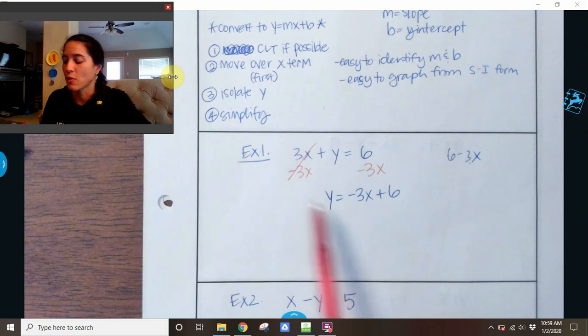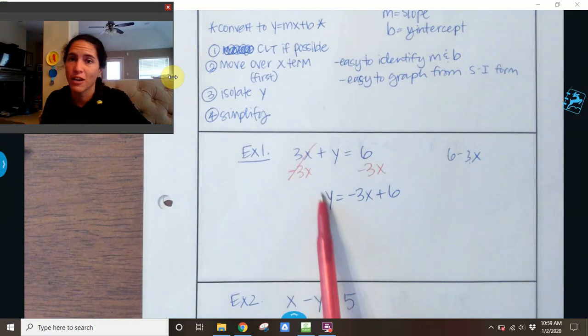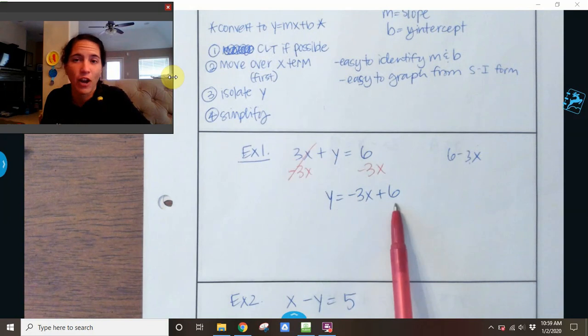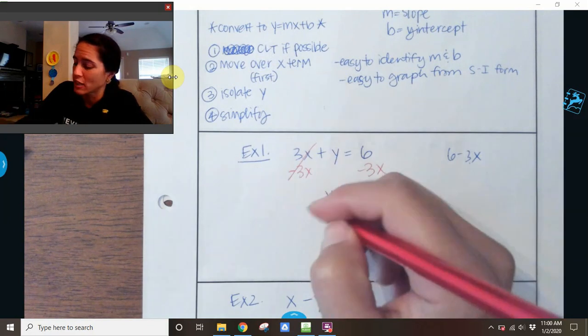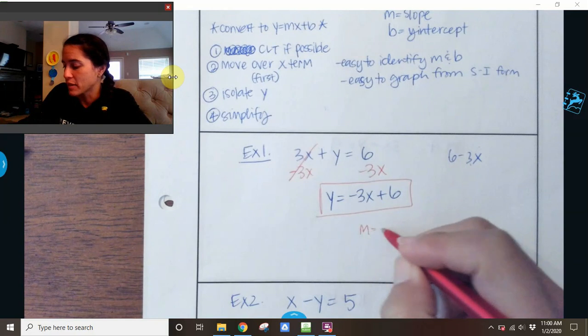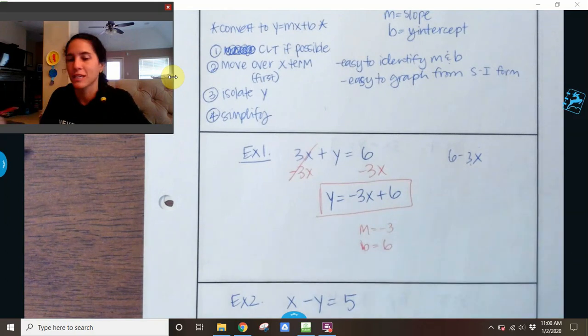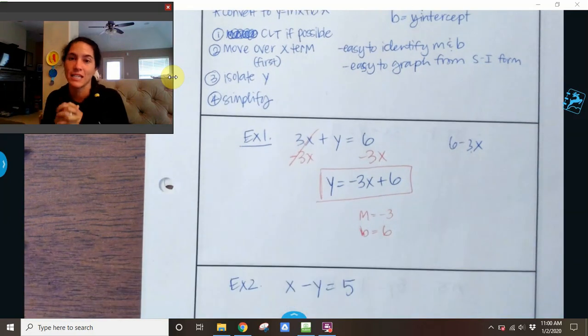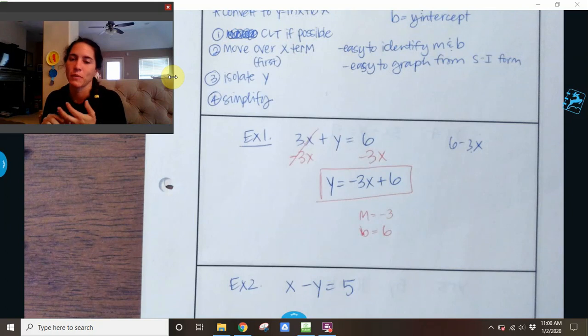Now I want to isolate Y. Does Y have anything with it? No. So Y is by itself, and now I simplify. I don't have any fractions to reduce. I don't have anything to clean up, so I am done. And my slope is negative 3, and my Y intercept is 6. So again, it's easy to identify your slope and your Y intercept.